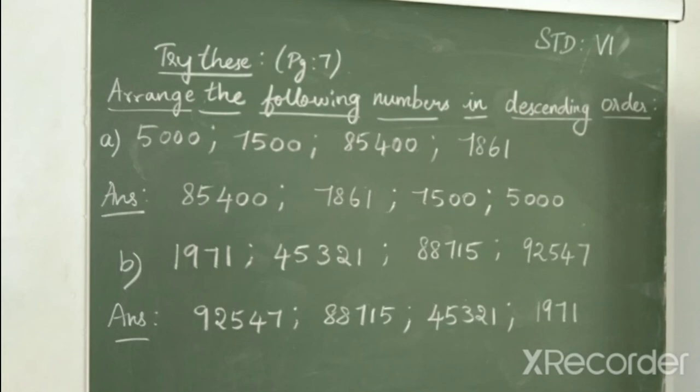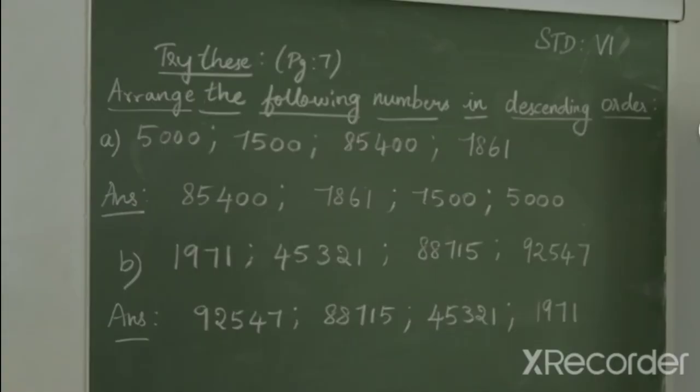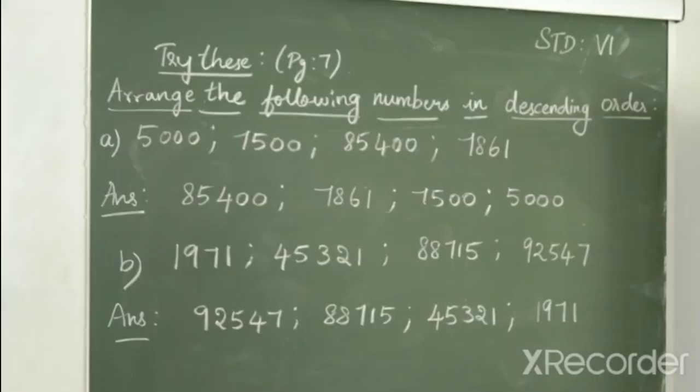Now, moving on to the next problem. Arrange the following numbers in descending order. So, descending order means we have to arrange the numbers from greatest to smallest.